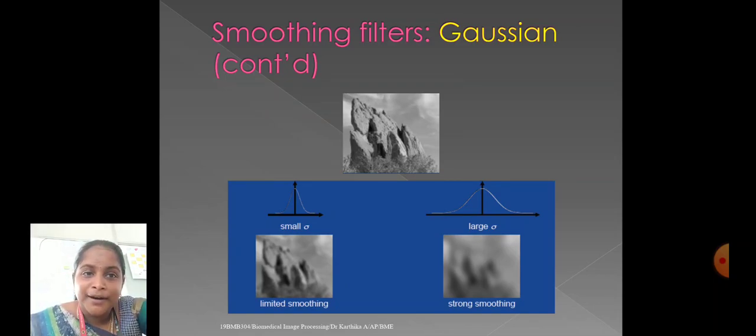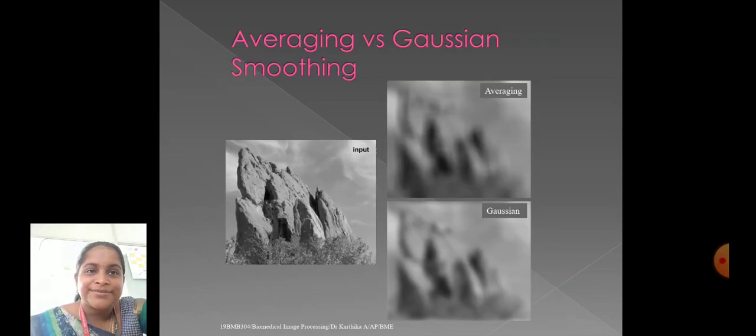And this is an example for Gaussian filter. Here, we have a small sigma, the output image has limited smoothing. And we have large sigma. Here, we have strong smoothing. This shows averaging versus Gaussian smoothing. Here, the input, averaging and Gaussian smoothing. The output is a perfect smoothing.